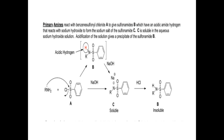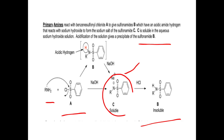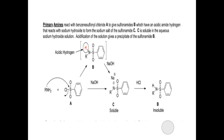In detail: primary amine (A) reacts with benzene sulfonyl chloride to give sulfonamide (B). When this acidic amide hydrogen reacts with sodium hydroxide, it forms sodium salt of the sulfonamide (C), which is soluble in sodium hydroxide solution. Acidification of the solution gives a precipitate of sulfonamide (B).